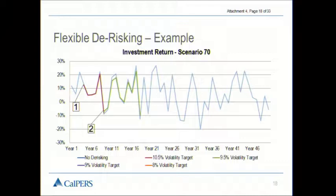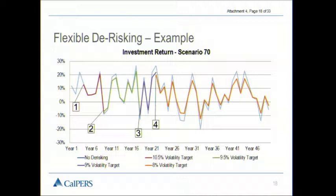There's a third de-risking event, and a fourth de-risking event occurring in year 22. You're seeing each of these de-risking events. But you still have, at this point, a fair amount of contribution volatility — it's less than it was before, but still a fair amount. So let's take a look at what this does to the employer contribution rate.